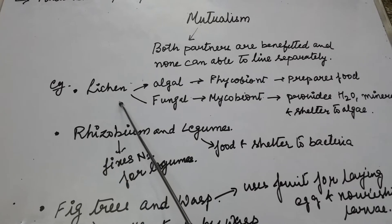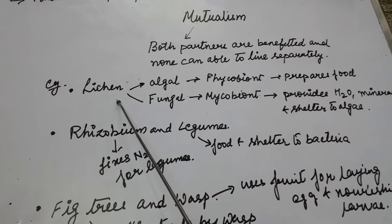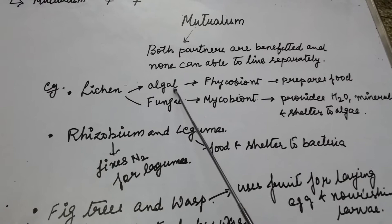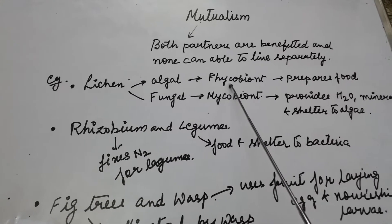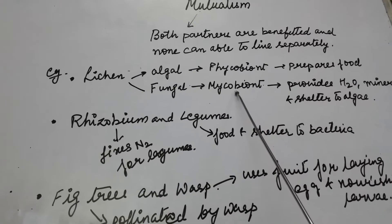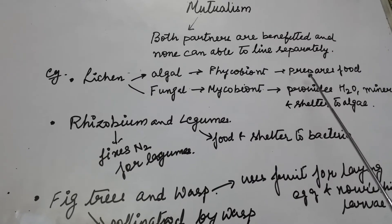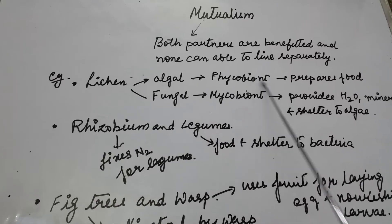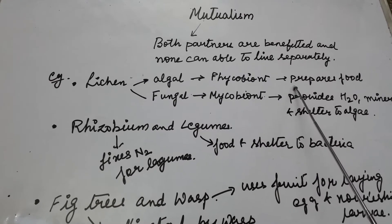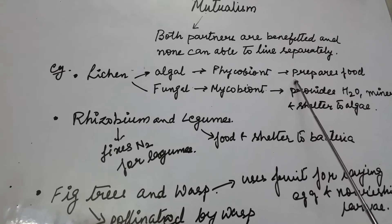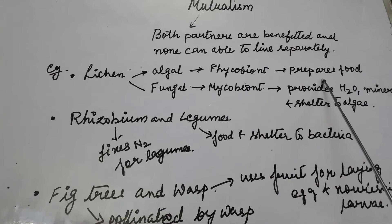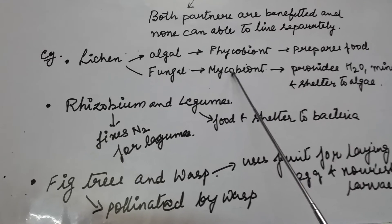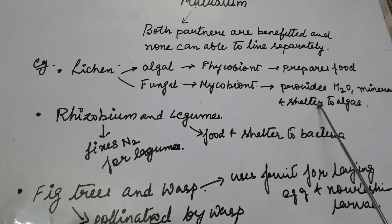For example, in the case of lichens — a composite entity — there are two types of partners. One is the algal partner, called phycobiont, and the other is the fungal partner, called mycobiont. In this association, being autotrophic in nature, the alga is capable of producing food using photosynthesis and prepares food for itself and for its fungal partner. In return, the fungal partner provides fixation, water, minerals, and shelter to the alga.